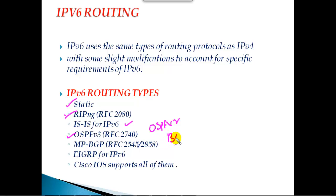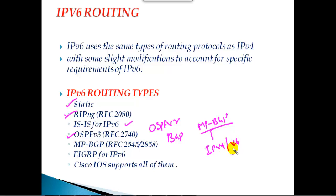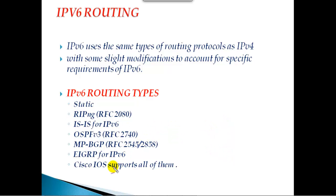BGP, which we use for IPv4, now supports something called MP-BGP (multi-protocol BGP). MP-BGP not only supports IPv4 but also supports IPv6, VPNv4, and VPNv6, which relate to MPLS concepts. And then EIGRP for IPv6 is also available. Almost all Cisco IOS versions support all of these features.